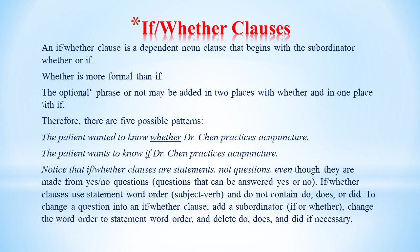If/whether clauses. An if/whether clause is a dependent noun clause that begins with the subordinator 'whether' or 'if.' 'Whether' is more formal than 'if.' The optional phrase 'or not' may be added in two places with 'whether' and in one place with 'if,' giving five possible patterns. For example: 'The patient wanted to know whether Dr. Chen practiced acupuncture.' 'The patient wants to know if Dr. Chen practices acupuncture.' Notice that if/whether clauses are statements, not questions, even though they come from yes/no questions. They use statement word order (subject + verb) and do not contain do, does, or did. To change a question into an if/whether clause: add a subordinator (if or whether), change the word order to statement word order, and delete do, does, and did if necessary.